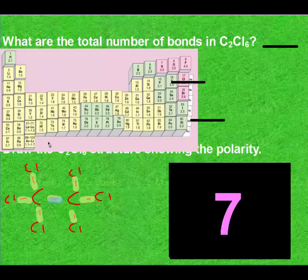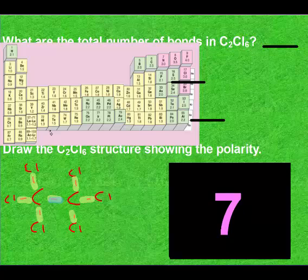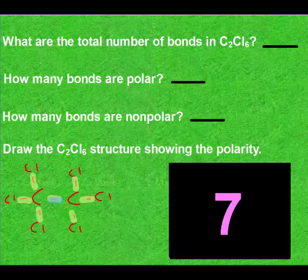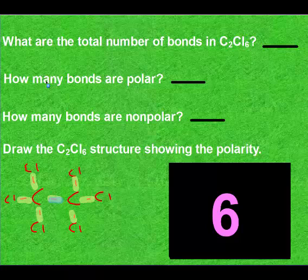Looking at the electronegativity values, carbon is 2.5, chlorine is 3, so that's a difference of 0.5, so those are polar. And carbon minus carbon is going to be 0. So we have six bonds that were polar and one that was nonpolar.